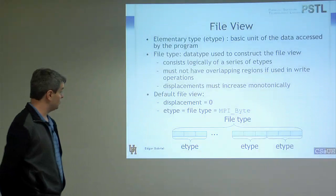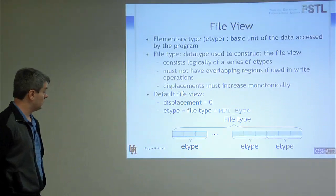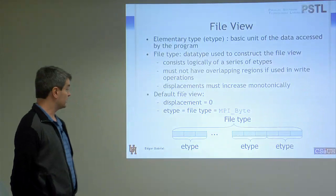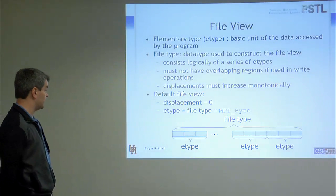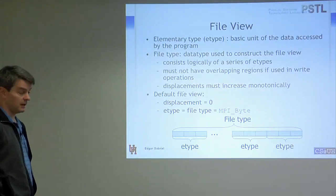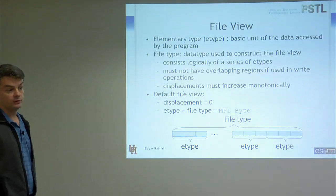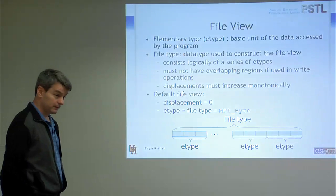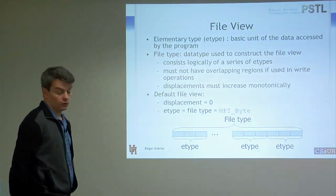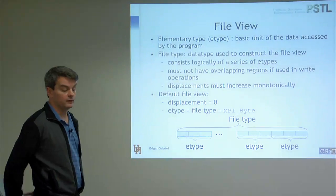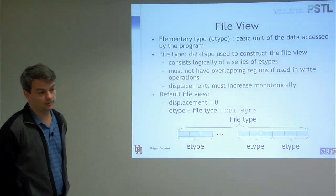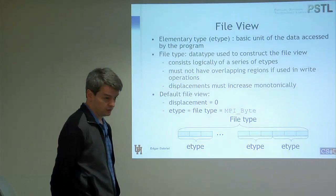If you open a file, you have a default file view, which means you start to read and write at the beginning of the file and the elementary type is set to MPI byte. In theory, you can do everything with the default file view. Of course, if you don't set a file view — which is perfectly legal — you are basically giving up a number of potential optimizations.